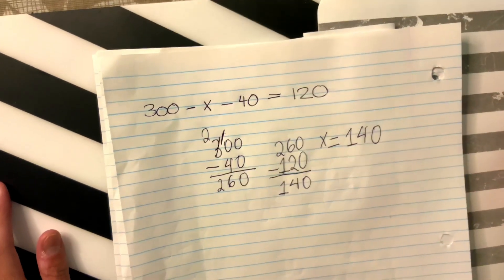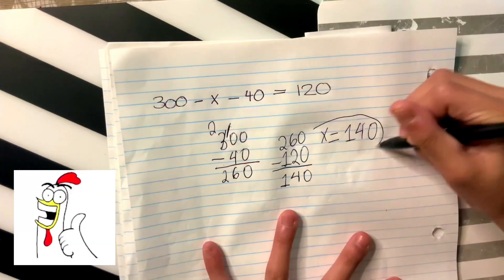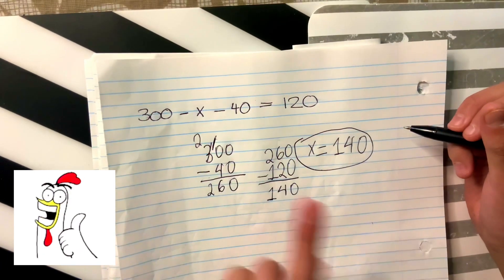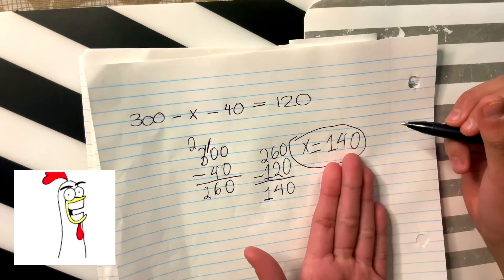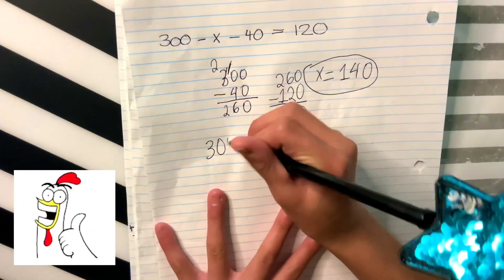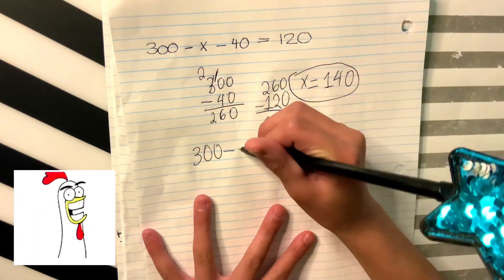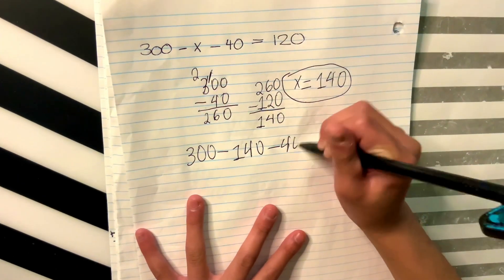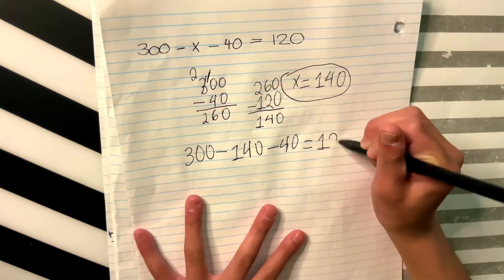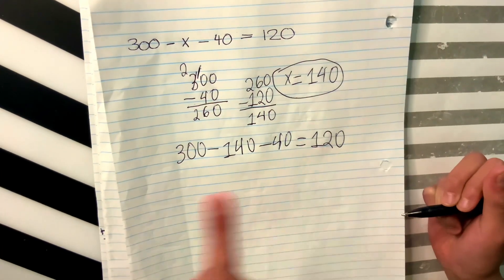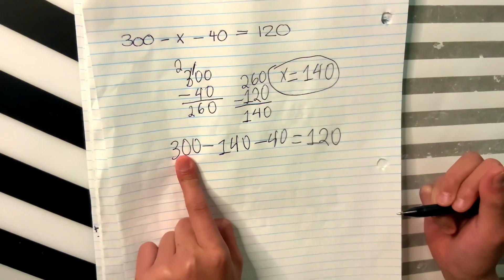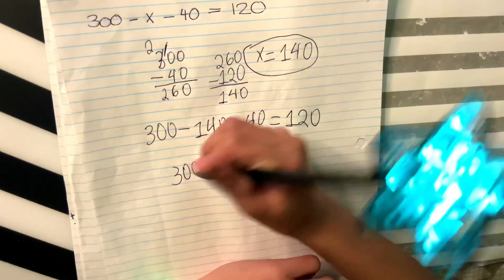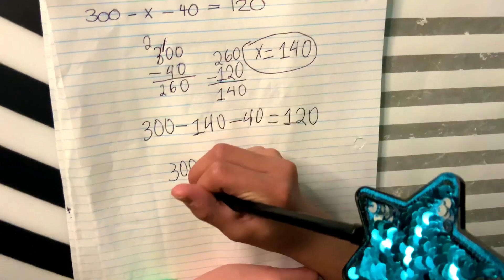So let's find out if our answer is correct. So we're going to substitute x to 140. So we're going to put 300 minus 140 minus 40 equals 120. So this side should be equal to this side. So now we're going to see if it's correct. So we're going to do 300 minus 140.